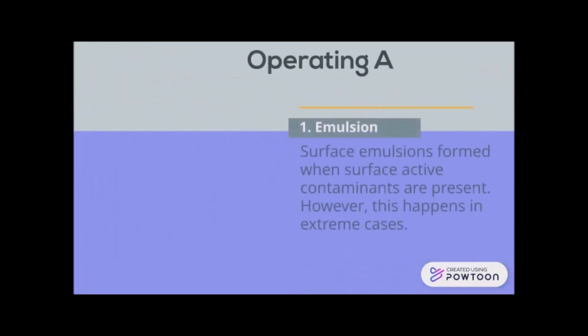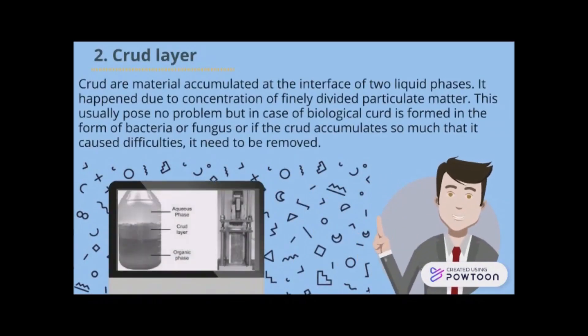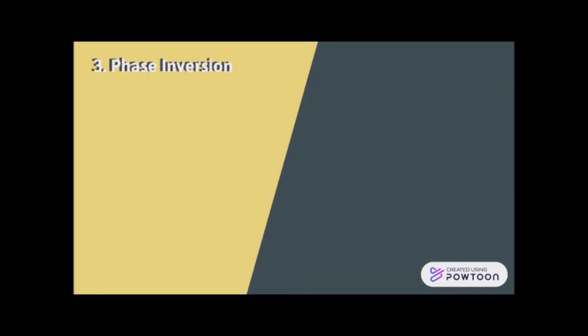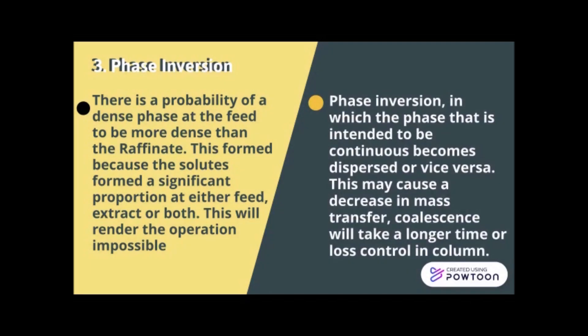The operating modes include single-stage liquid-liquid extraction, cross-flow, countercurrent, and fractional extraction. Regarding operating and design pitfalls: first is emulsion — surface emulsions are formed by surface-active contaminants, though this happens only in extreme cases. Crud layer refers to material accumulated at the interface of two liquid phases due to concentration of finely divided particulate matter; in cases where biological crud forms as bacteria or fungus and accumulates enough to cause difficulties, it must be removed. Phase inversion occurs when the phase intended to be continuous becomes dispersed, which may decrease mass transfer, delay coalescence, or cause loss of column control.